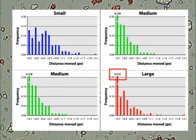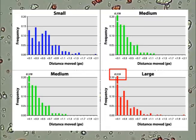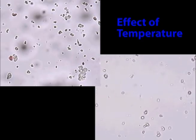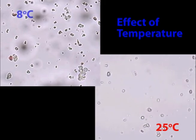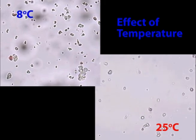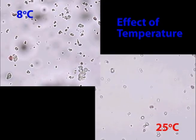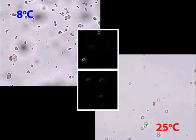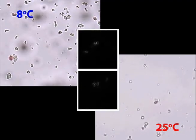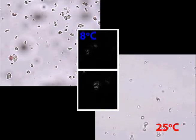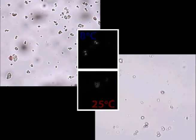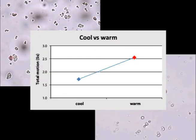Indeed, the large particle shows no discernible movement in more than 50% of the frames. If temperature is random thermal motion, then temperature should also affect Brownian motion. Here are two clips showing Brownian motion at 25 degrees Celsius and at 8 degrees Celsius. It appears that the motion is less when it's cooler. We can quantify this using image analysis to measure the total motion of a particle — the brighter the light, the more intense the motion. Total motion is greater when it's warm than when it's cool, as we expect.